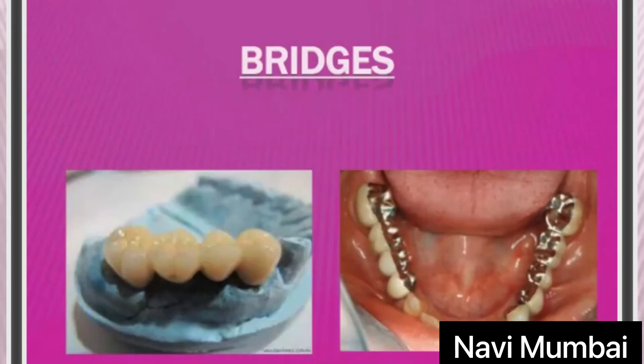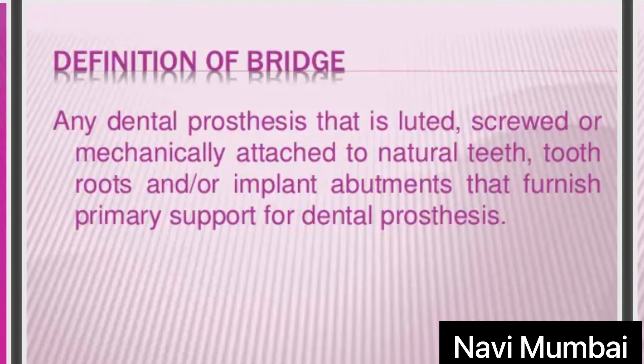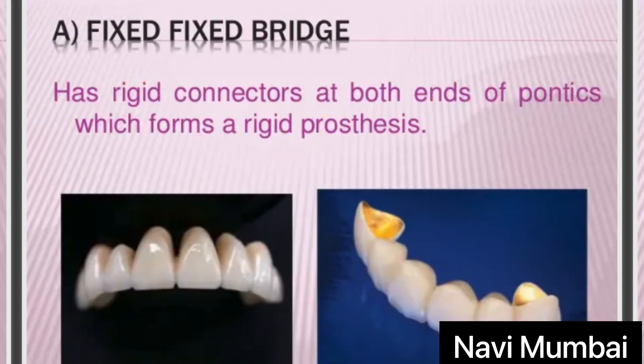Now let us talk about bridges. What is a bridge? Any dental prosthesis that is cemented, screwed, or mechanically attached to natural teeth, tooth roots, or implant abutments that furnish primary support for the dental prosthesis is called a bridge. Generally, when two or more teeth are missing, we use bridges.